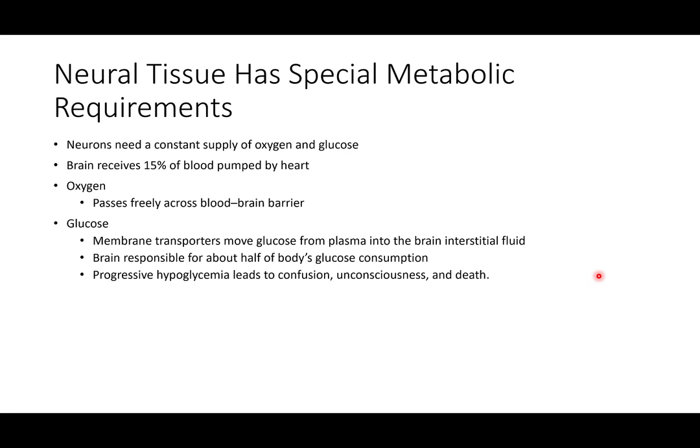Neural tissue has very special metabolic requirements. Because of the amount of membrane transport in neurons — involving sodium, potassium, calcium, and chloride channels — neurons need a constant supply of oxygen to undergo respiration and generate ATP, and a constant supply of glucose. ATP powers our sodium ATPase pumps, axonal transport, neurotransmitter synthesis, and other enzymatic reactions.